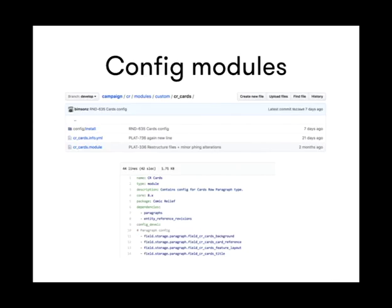This is an example of some of the modules we have in our profile — this is the Cards module, one of these row components. All the modules are very simple: they contain an info.yaml file referencing all the pieces of config the module exports, a .module file which is very often empty, and a config/install directory which contains the YAML config exports.